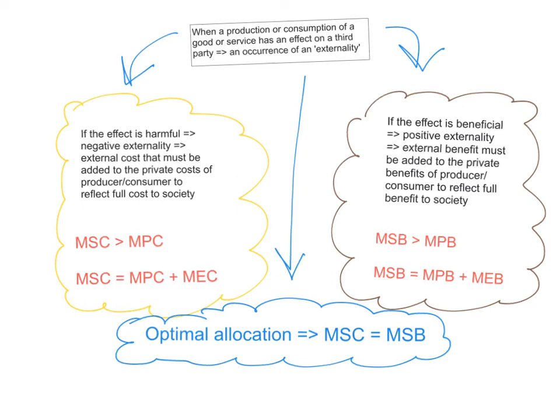So what are externalities? Basically externalities occur when the production or consumption of a good or service has an effect on a third party. In this situation we say that an externality has occurred.